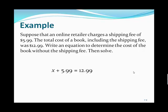This is an addition equation, so we would subtract 5.99 from both sides. When we do that, the left-hand side will become x, and we simplify the right-hand side and get 7. So it looks like our book costs $7.00.